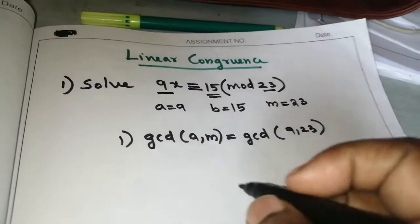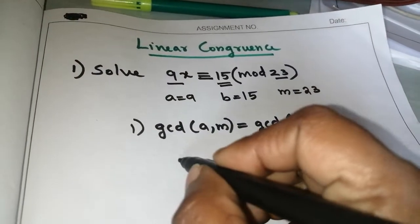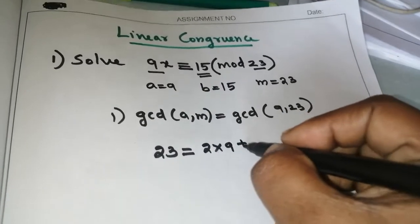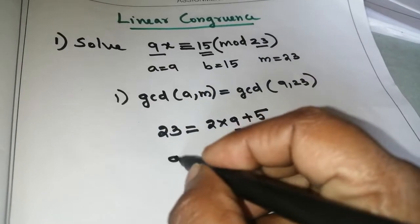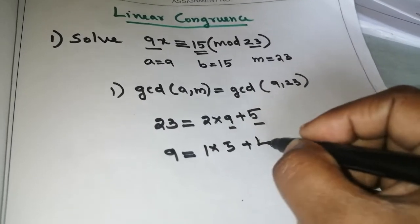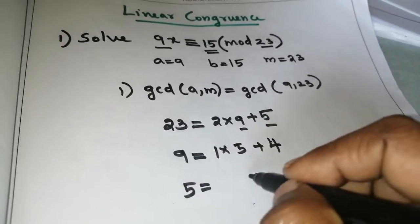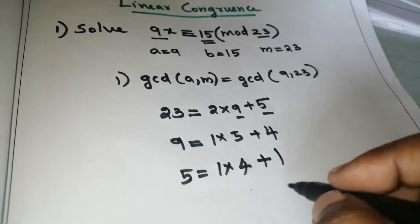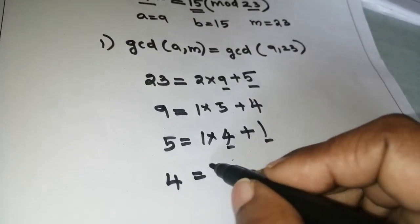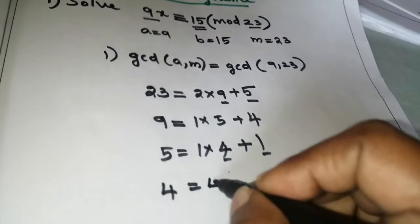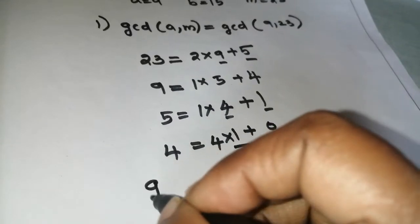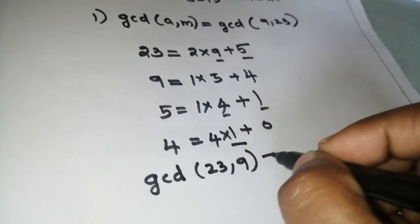Find out the GCD of 9 and 23. First step: GCD of 23 and 9. 23 divided by 9: 2 into 9 plus 5. Next, divide 9 and 5: 9 equals 1 into 5 plus 4. Next, 5 divided by 4: that is 1 into 4 plus 1. Next, 4 divided by 1: 4 equals 4 into 1 plus 0. So here GCD equals 1. GCD of 23 and 9 equals 1.